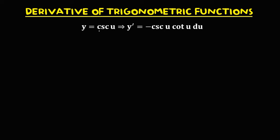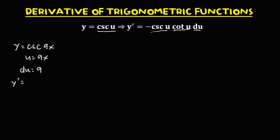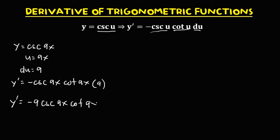For the derivative of cosecant u, that's negative cosecant u times cotangent u times du. So if we have y equals cosecant 9x, u equals 9x and du is 9. We have y prime equals negative cosecant 9x times cotangent 9x times du, that's 9. So y prime equals negative 9 times cosecant 9x cotangent 9x.